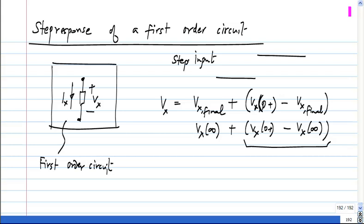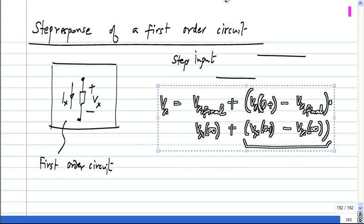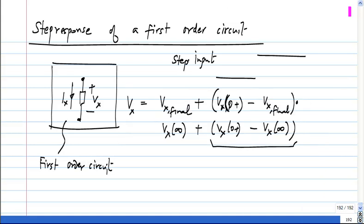And this part—this is the part that dies out, that is the natural response right—and this will be multiplied by exponential minus t by tau.